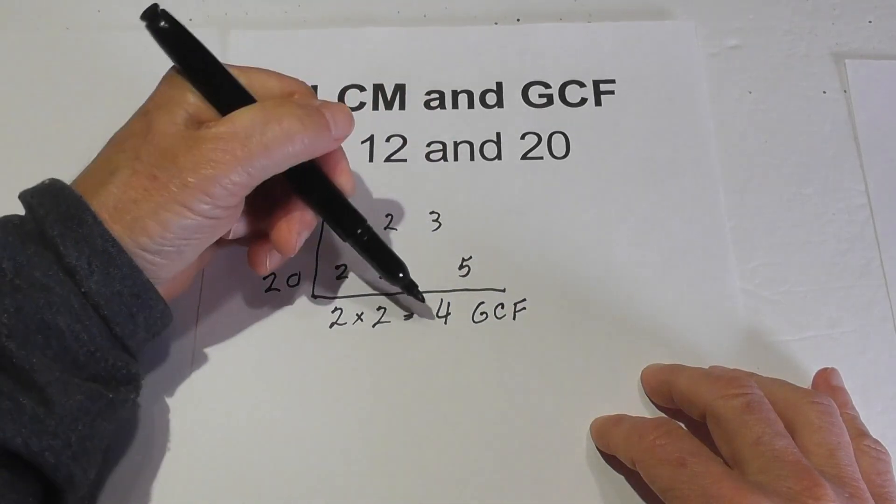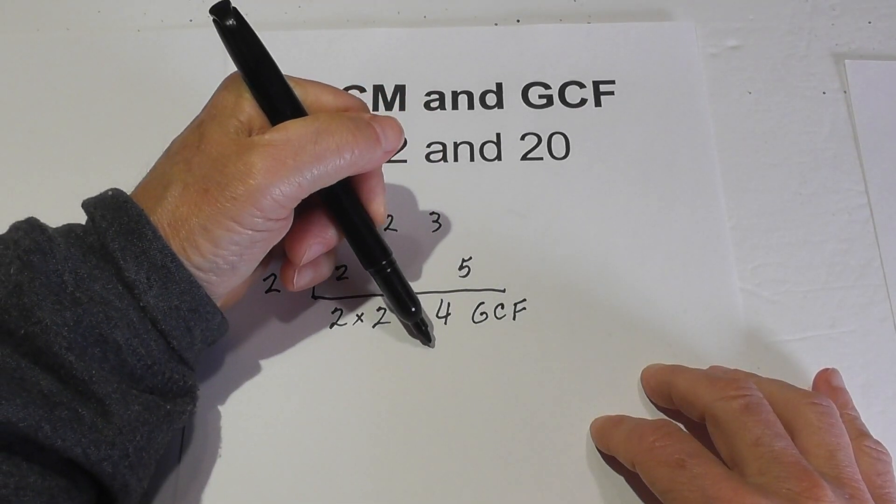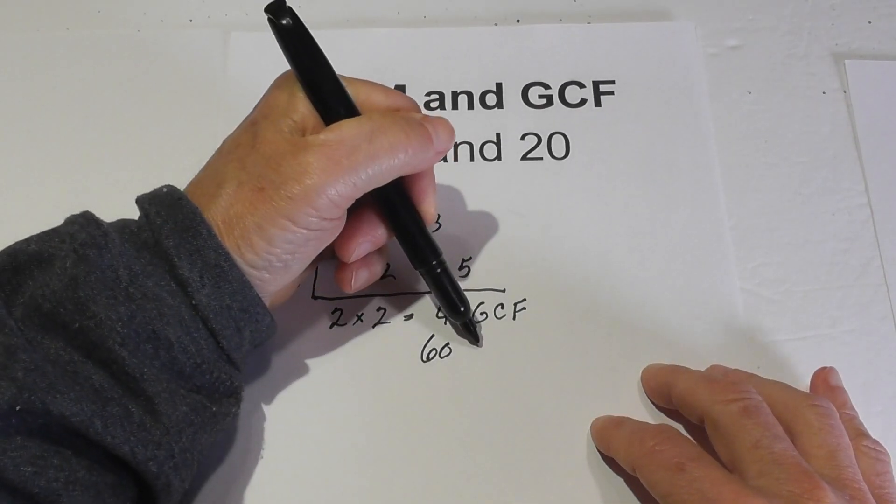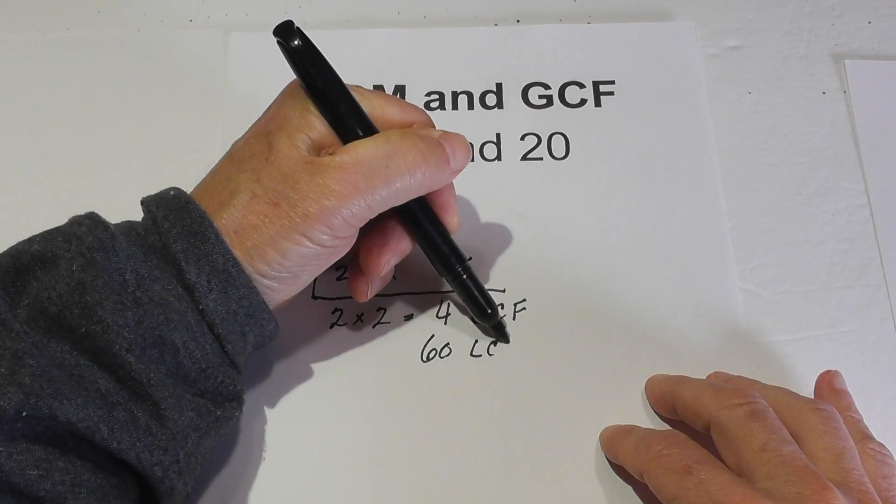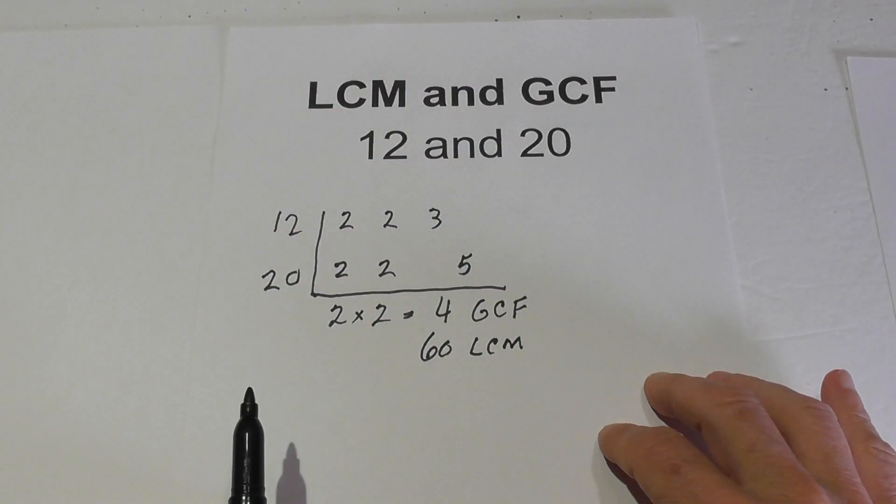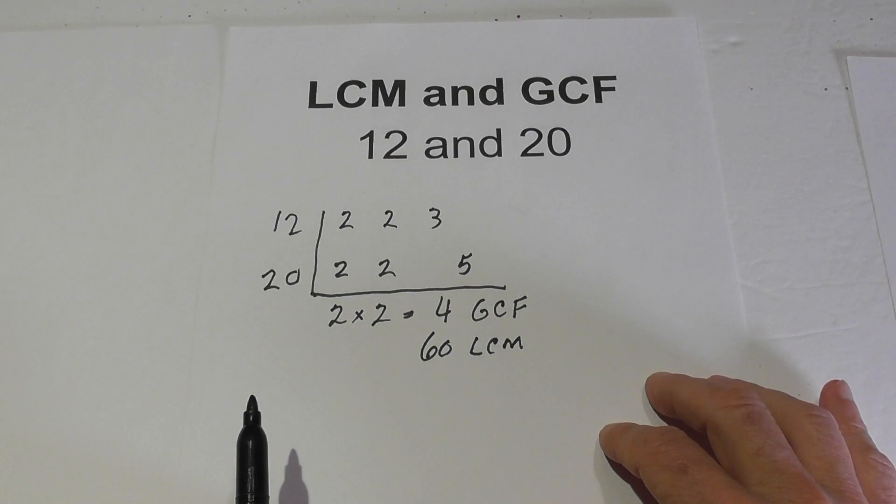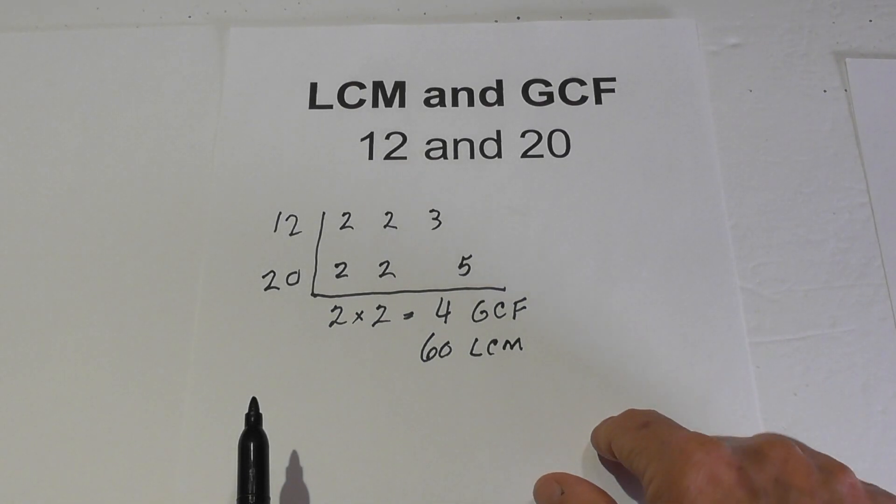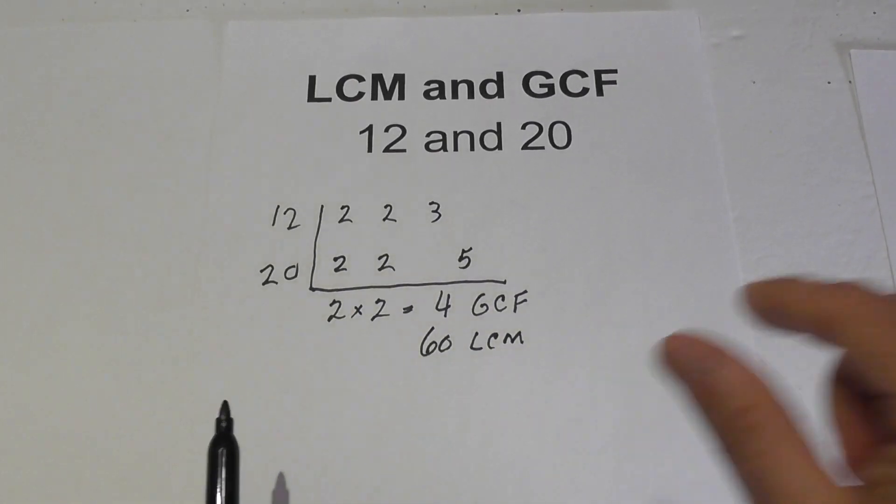So in summary, 4 is the greatest common factor, and our number before was, for the LCM or lowest common multiple, is 60. I hope that helps. Thanks for watching. And Moomoo Math uploads a new math and science video every day. Please subscribe and share.